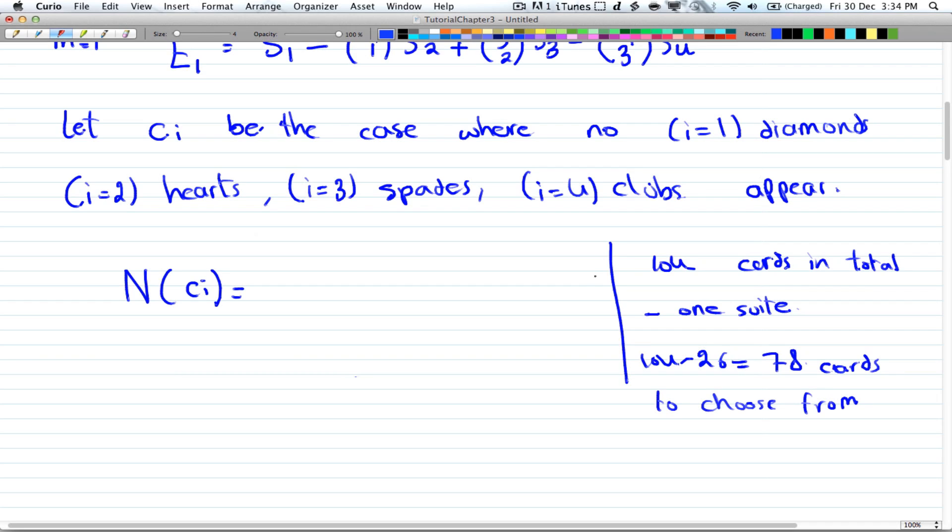And since this is a question we're dealing 13 cards, then you have 78 choose 13. And of course the c_i can be anything, so you have 4 suits. So you have 4 choose 1, since we're only excluding 1 suit. You have 4 choose 1 ways of taking 1 suit and 78 choose 13 ways of taking 13 cards. And that is equal to s_1.